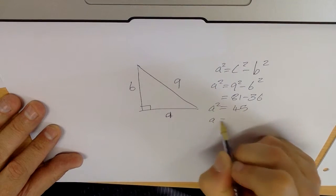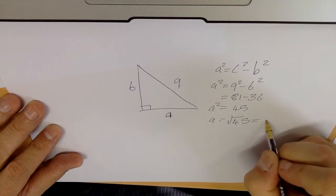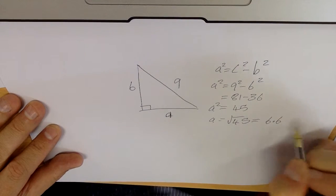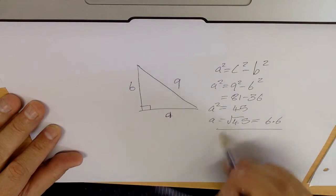A squared is 45, so A is the square root of 45 which equals approximately 6.6. Lily says yes it's back to front, but there's my answer and I'm going to stop recording.